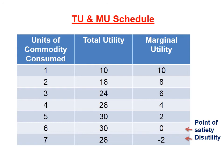Now let us see the observations of the TU and MU schedule. The first observation is that at the initial stage, TU equals MU — both are 10. Next, TU goes on rising while MU goes on falling with additional consumption. When the consumer consumes the sixth unit, TU becomes maximum at 30 and MU becomes 0. Joining these points gives us the point of satiety, or maximum satisfaction.